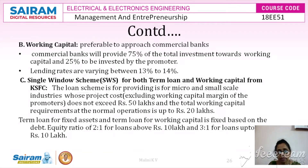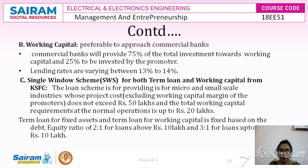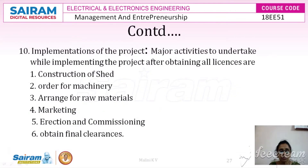Under the single window scheme, the term loan is limited to 50 lakhs and working capital can be met up to 20 lakhs. The term loan covers fixed assets like plant, machinery, land, building, construction, and other non-recurring requirements. The debt-to-equity ratio is fixed at 2:1 for loans above 10 lakhs, and 3:1 for loans up to 10 lakhs under the single window scheme.